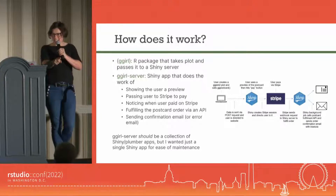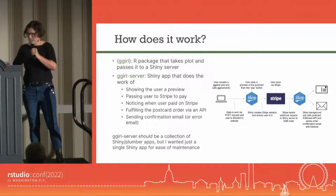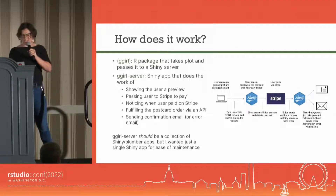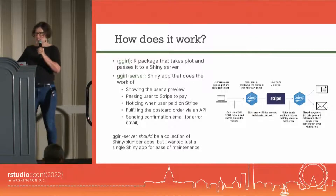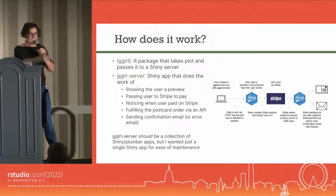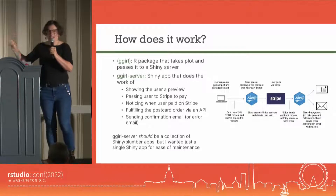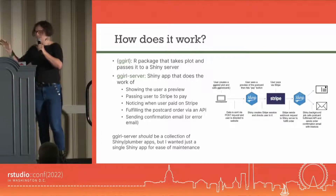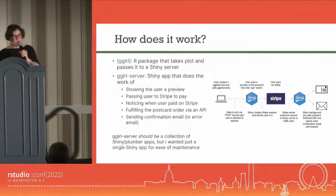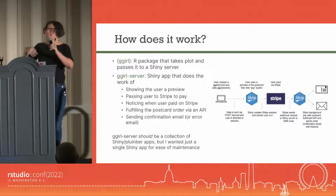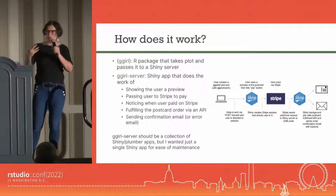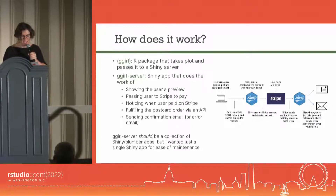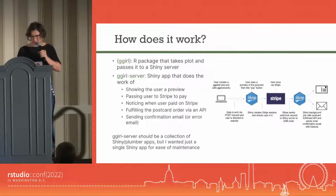There's an R package called GGIRL that you install on your computer and it talks to a Shiny server. And then there's a Shiny server called GGIRL server, which does all the work of showing the user preview, passing the information to Stripe, and fulfilling the postcard via an API. In theory, GGIRL server should be multiple Shiny apps and Plumber APIs — the fulfillment and uploading probably better done as an API via Plumber. But for ease of maintenance — meaning I'm super lazy — I really just want one Shiny app to do all of this. Making this work leads to a lot of engineering questions.